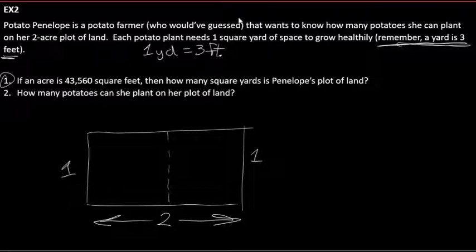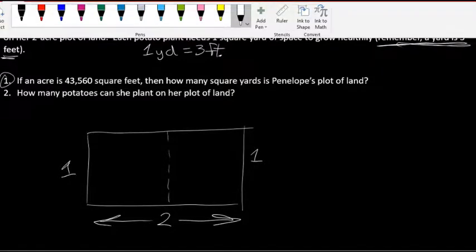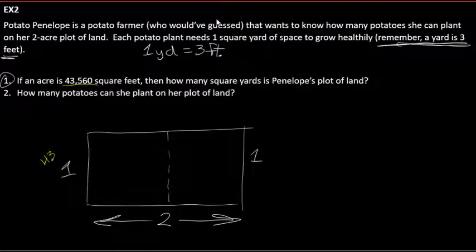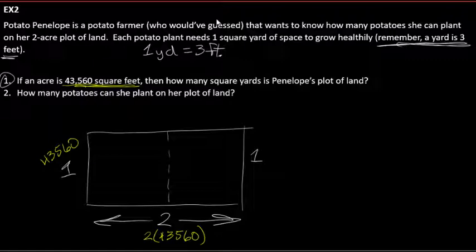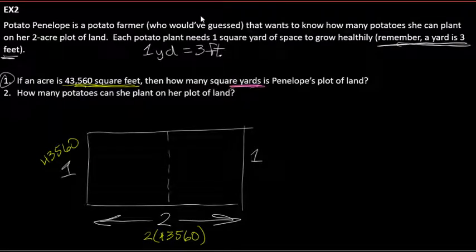One yard equals three feet. If an acre is 43,560 square feet, we have 43,560 for one acre and two times 43,560 for the other. We need the area in square yards, not square feet. To convert: since one yard equals three feet, we take 43,560 and divide by 3, giving us 14,520.